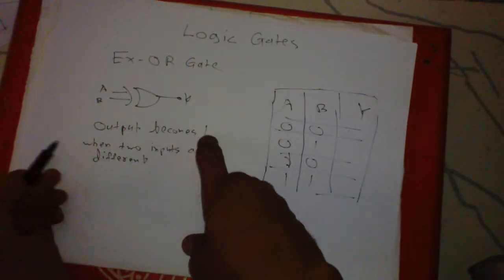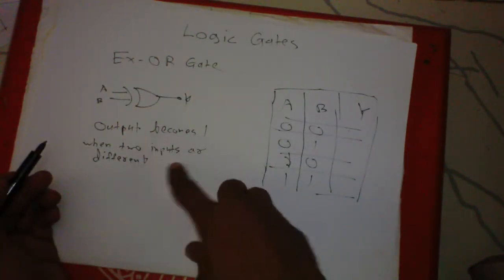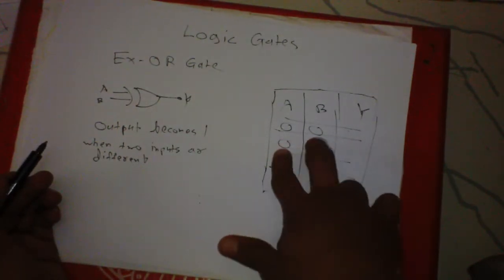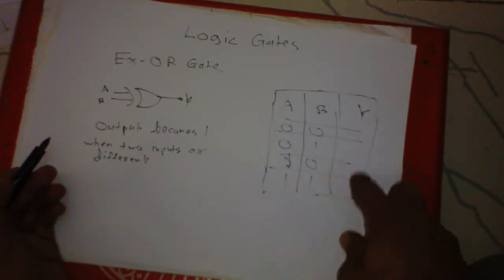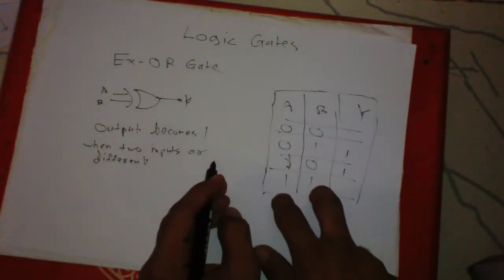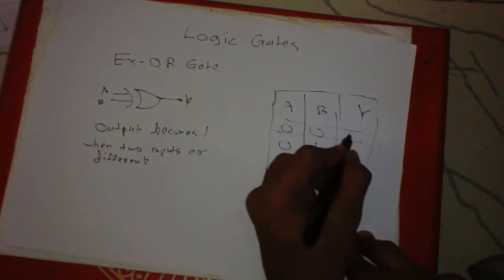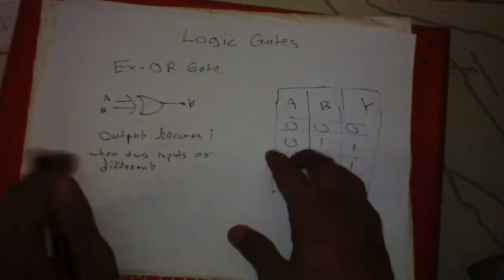Here output becomes one when two inputs are different, so here two different inputs are zero one and one zero, so output will be one. And here two inputs are same, output will be zero. As simple as that.